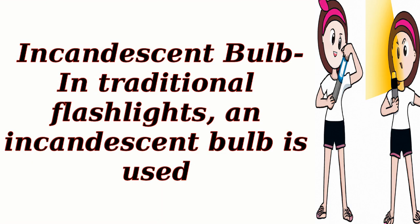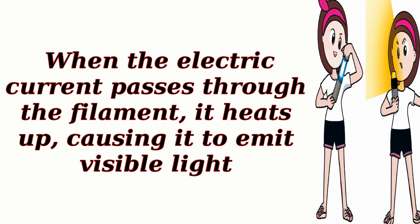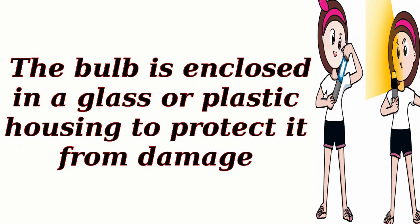Incandescent bulb: in traditional flashlights, an incandescent bulb is used. This bulb consists of a filament made from a tungsten wire that is resistant to high temperatures. When the electric current passes through the filament, it heats up, causing it to emit visible light. The bulb is enclosed in a glass or plastic housing to protect it from damage.